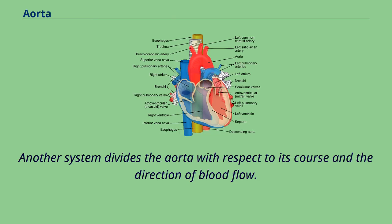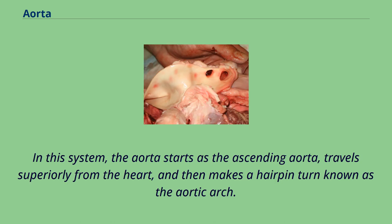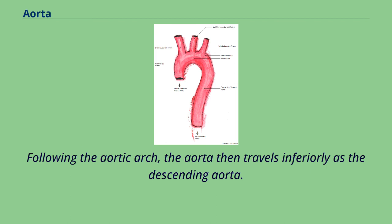Another system divides the aorta with respect to its course and the direction of blood flow. In this system, the aorta starts as the ascending aorta, travels superiorly from the heart, and then makes a hairpin turn known as the aortic arch. Following the aortic arch, the aorta then travels inferiorly as the descending aorta.